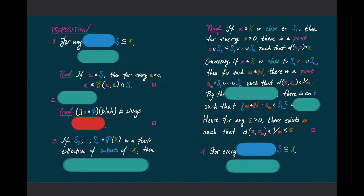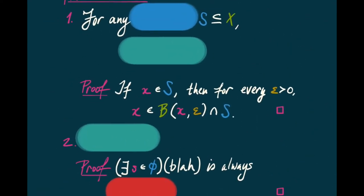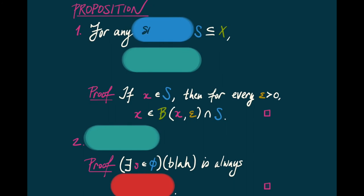Now we turn to an important proposition. Its importance is that it will allow us to contemplate the closure operator without necessarily remembering the notion of distance we've been using. This proposition isolates the key properties of the closure operator that we'll later abstract when we speak about topological spaces in general. First property: if I have a subset S of x, then every point of S is close to S — S is contained in its closure. The proof: if x is a point of S, then for every epsilon greater than 0, x itself is in the epsilon ball around x and in S.